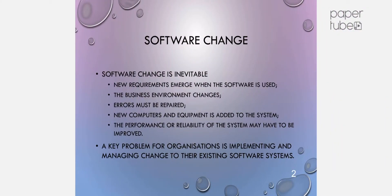First we will discuss software change. Software change is inevitable. New requirements emerge when the software is used, the business environment may change, errors must be repaired, new computers and equipment are added to the system, and the performance or reliability of the system may have to be improved. A key problem for organizations is implementing and managing change to their existing software systems.